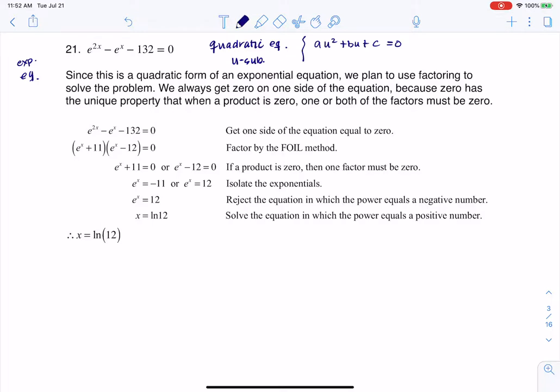So when you go to deal with a u-sub, you take that middle term, or what would be the linear term, and you're going to let u equal that middle term. And then the next step is always to square both sides of that equation. So I'm going to just write this off to the side here, just so we have it.